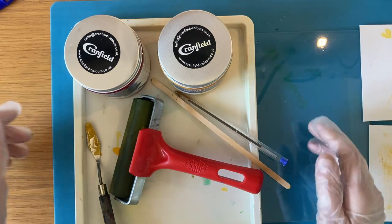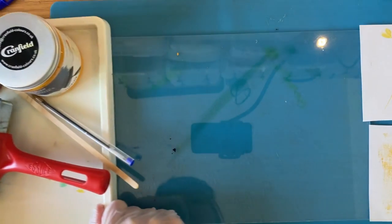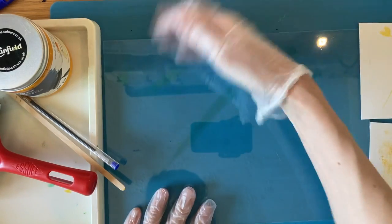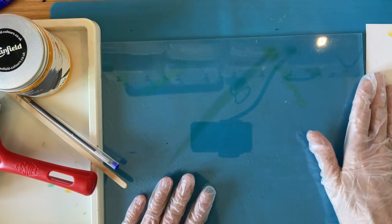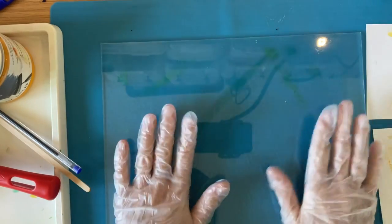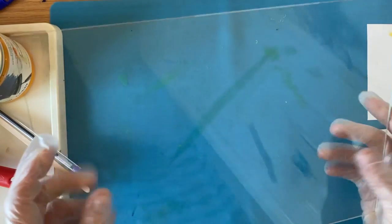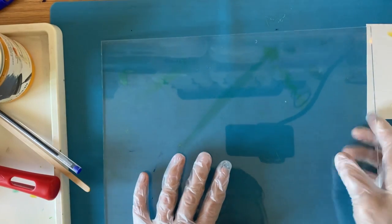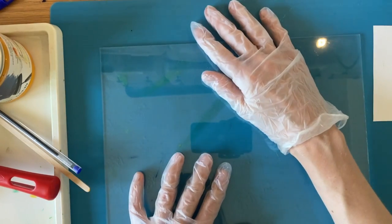They're quite simple techniques to run through. So I'll start and just show you some of your equipment. You have this clear perspex sheet, and you lay that onto your blue mat.